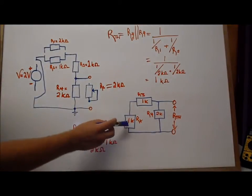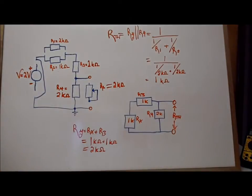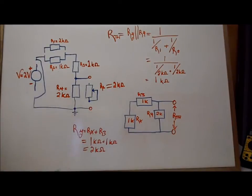And so basically what that means is we have one kilo ohm plus one kilo ohm in series. So I'm going to call that product RY. So when we take Rx plus R3, we're going to find out that it's actually equal to two kilo ohms.